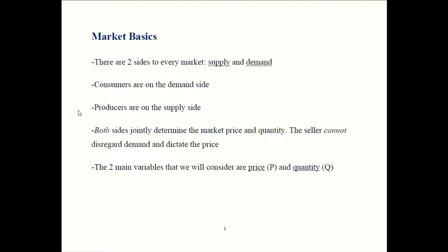If the supplier could just dictate the price, they might make a banana cost a thousand dollars, but nobody would buy it at that price. So a thousand dollars can't be the equilibrium price for a banana — consumers have input on that and can simply choose not to buy if the price is too high. For notation, we typically use P for price and Q for quantity, and you'll see that not just in this class but in other econ classes as well.